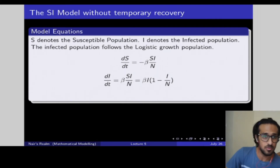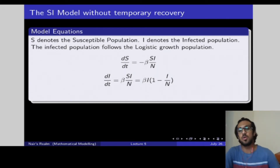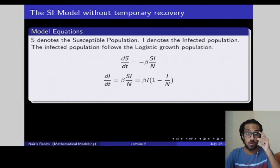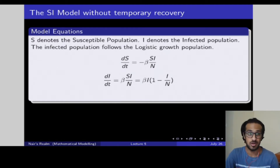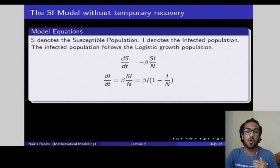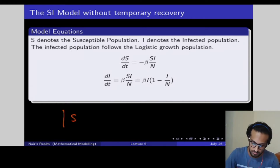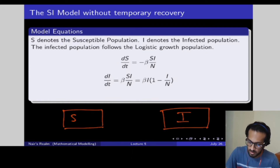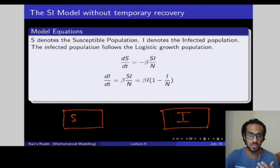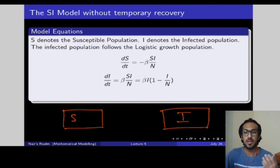Before we get started, let's quickly look at what the SI model covered and how we can use it for an entirely different application — tackling the spread of rumors. In the previous video we spoke about how the SI model is used to model disease dynamics. We said there are two compartments: the S compartment and the I compartment. S consists of the susceptible population — people who are prone to getting a disease — and I consists of the infected population, which is people who actually have the disease.